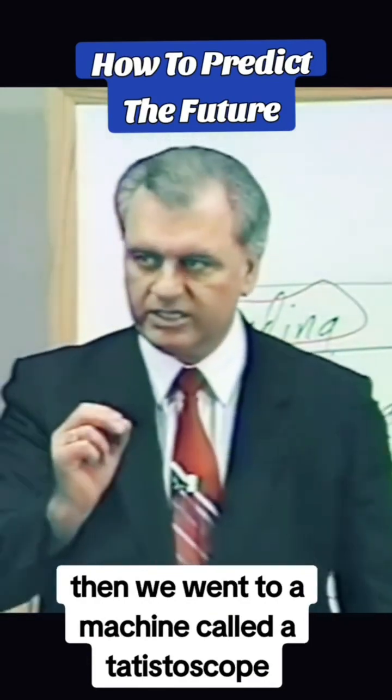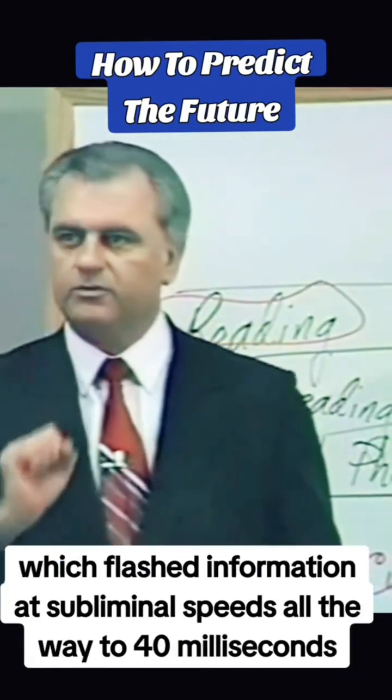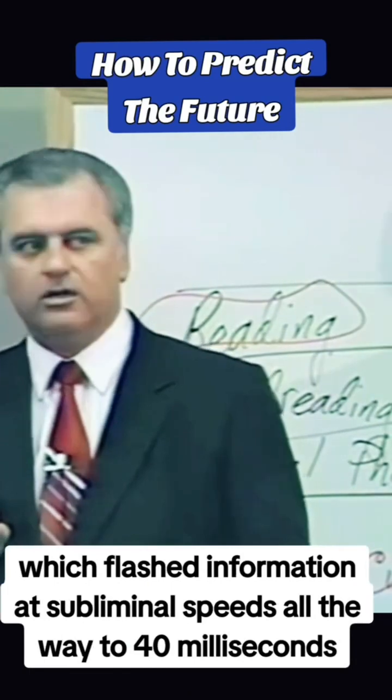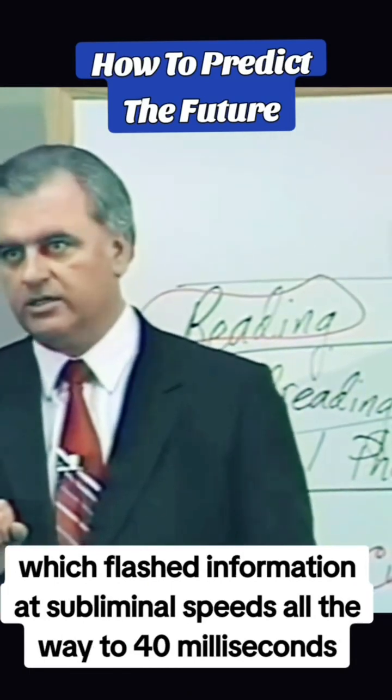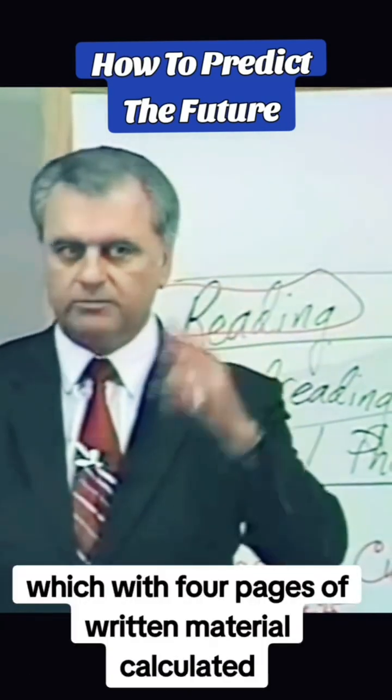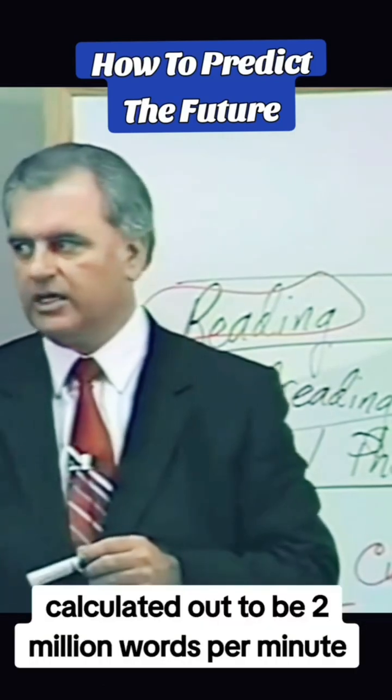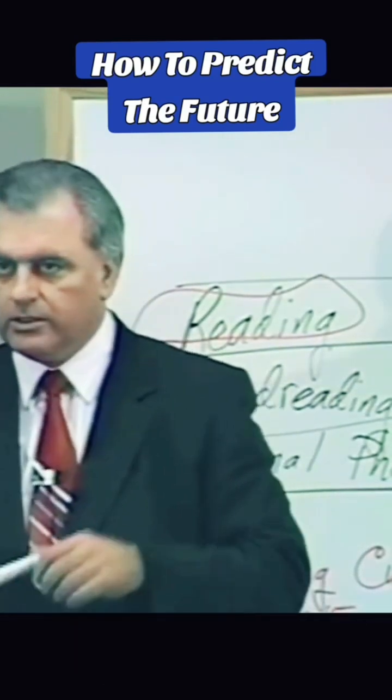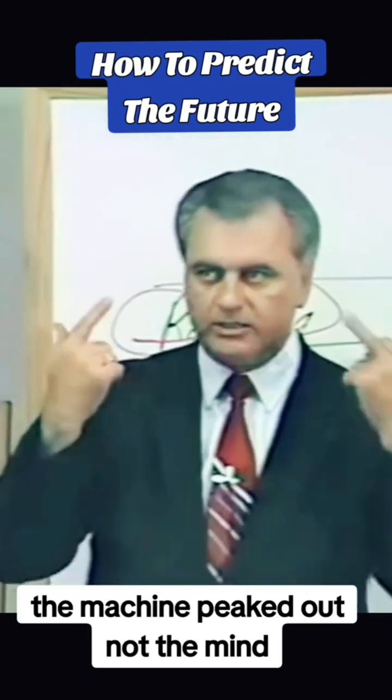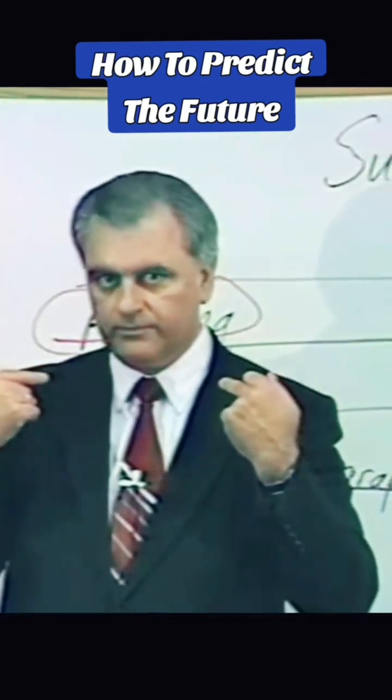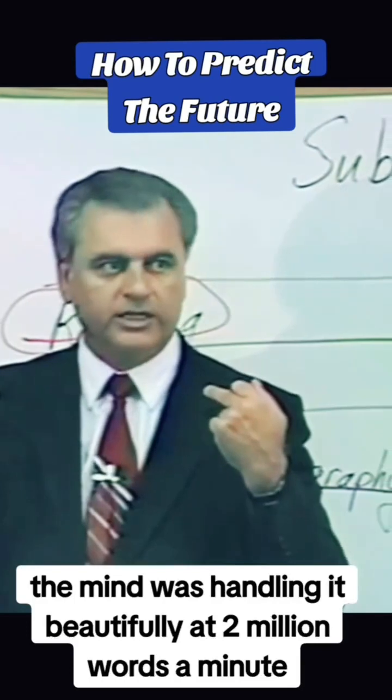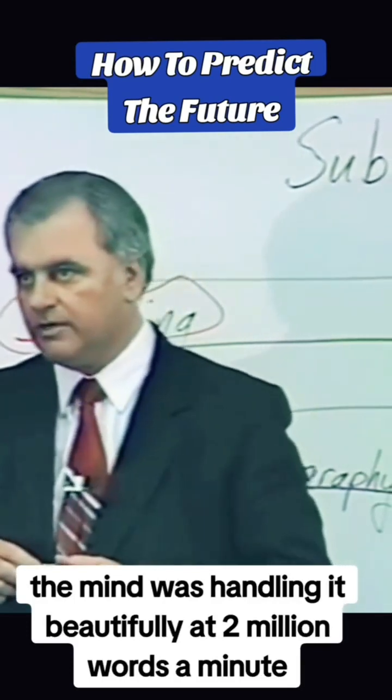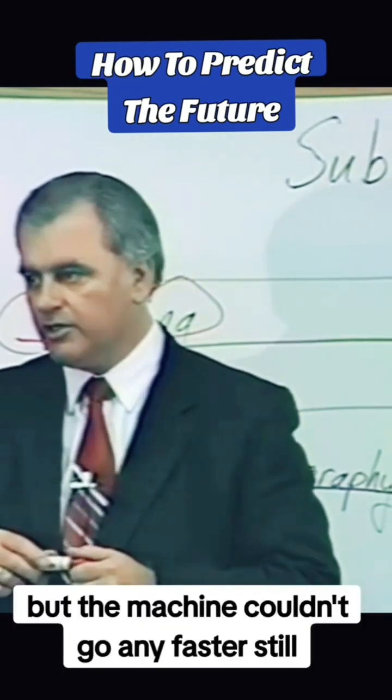Then we went to a machine called the tachistoscope which flashed information at subliminal speeds all the way to 40 milliseconds. With full pages of written material, this calculated out to be two million words per minute. The machine peaked out, not the mind.